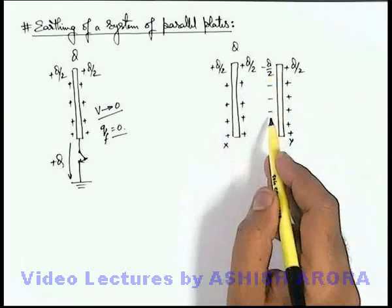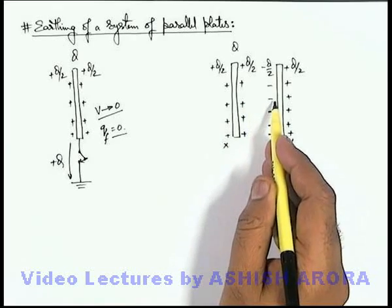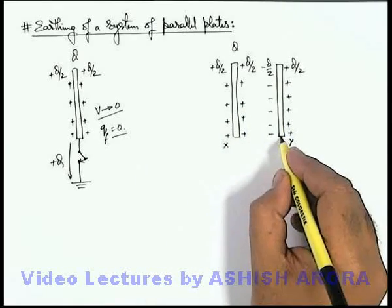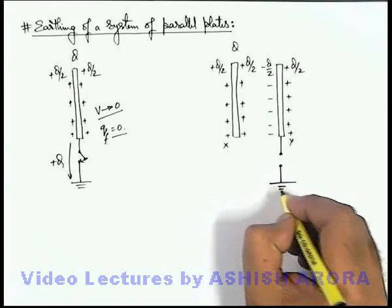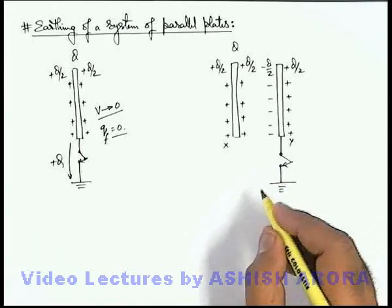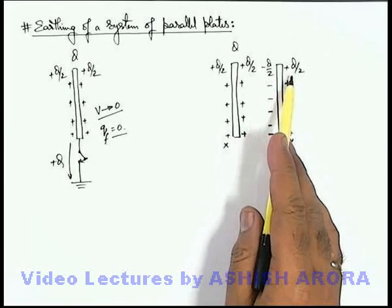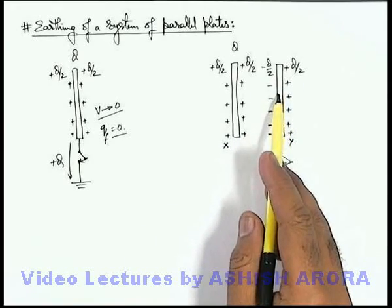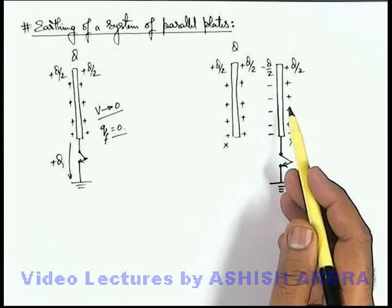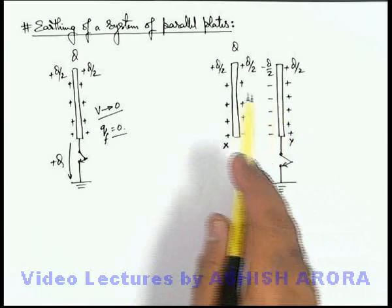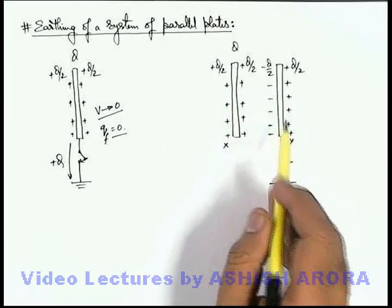The minus q by 2 is induced because the whole flux of this plus q by 2 has to terminate onto that face. Now if this uncharged plate Y is connected to earth via switch, let's see what will happen when the switch is closed. Due to the induced charges there will not be any net potential on plate Y because the net charge of this plate is zero and its thickness is negligible. But due to the positive charge on the outer face there will be some positive potential which will exist on plate Y.